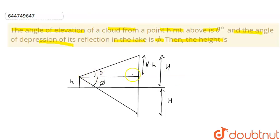If we look in this triangle, tan theta will be equal to perpendicular upon base. Let base be x. So perpendicular is H minus h upon x. So x comes out to be H minus h upon tan theta.